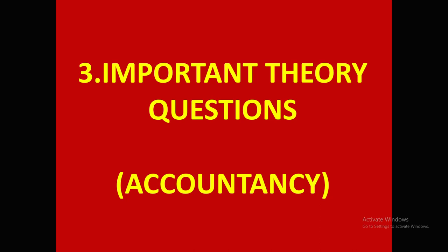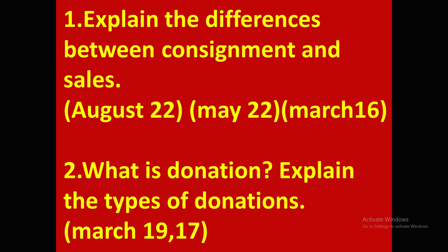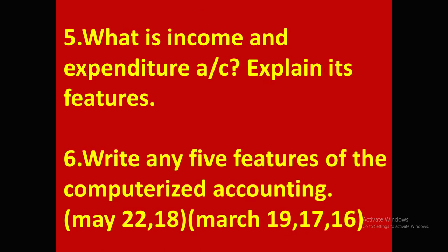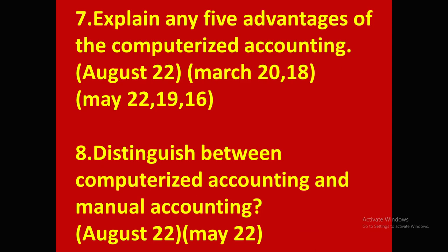With this, the second topic — important questions from the commerce part — is completed. Now come to the third topic: important theory questions from the accountancy part. Let us see the 5-mark theory questions first. 1. Explain the differences between consignment and sales. 2. What is donation — explain the types of donations? 3. Write the differences between receipts and payments account and income and expenditure account. 4. What are the characteristics of receipts and payments account? 5. What is income and expenditure account — explain its features? 6. Write any 5 features of computerized accounting. 7. Explain any 5 advantages of computerized accounting. 8. Distinguish between computerized accounting and manual accounting.